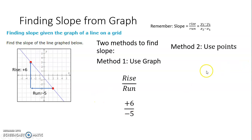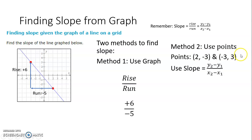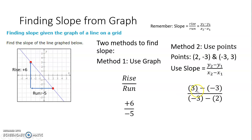Let me show you the other way you could do it using the two points from that graph. This point here is (2, negative 3) and that point over there is (negative 3, 3). Plugging into the slope formula: y2 minus y1 is 3 minus negative 3, which becomes plus 6, over x2 minus x1, which is negative 3 minus 2, that's negative 5. We get the same answer. So you can do it either way. In general, when given a graph, using the rise over run method is going to be a lot easier.